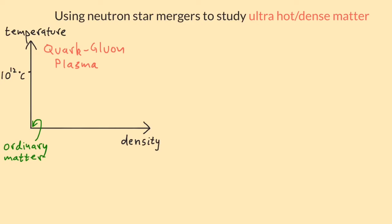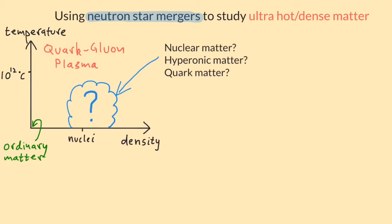But what if you compress matter as well, making it denser than nuclei? That's what happens in neutron star mergers. At those densities is matter still made of neutrons and protons, what people call nuclear matter? Or are there also particles called hyperons that contain strange quarks? Or are all these particles crushed out of existence, liberating the quarks inside them to make some form of quark matter? We'd like to use neutron star mergers to help us answer these questions.